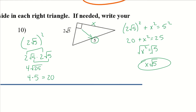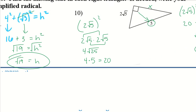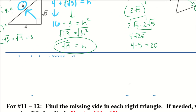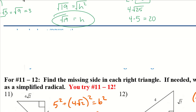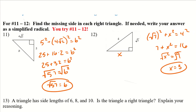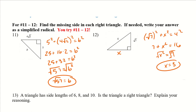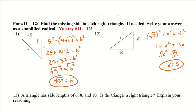Go ahead and try numbers 11 and 12, keeping answers as simplified radicals. For number 12, we are able to simplify to a whole number. For number 11, 57 has factors of 3 and 19, but those are both prime, so we can't simplify further. We leave it as the square root of 57.